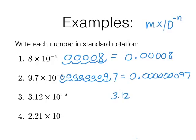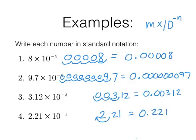For 3.12 times 10 to the negative 3: move 3 spaces to the left — that's 0.00312. For 2.21 times 10 to the negative 1: one decimal place to the left — that's 0.221. Again, not a very logical number to have in scientific notation, but you see the general idea. We'll practice this in the classroom — bring any questions to class, and I'll see you there.